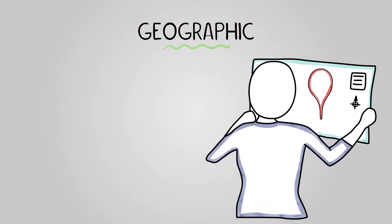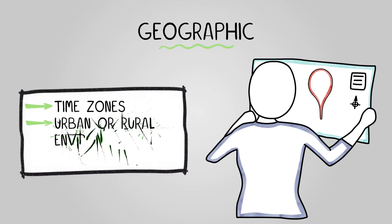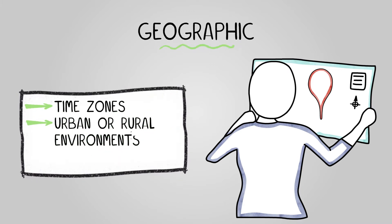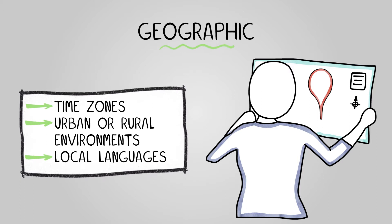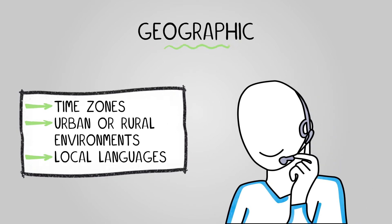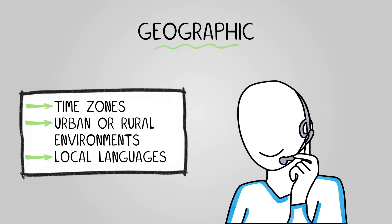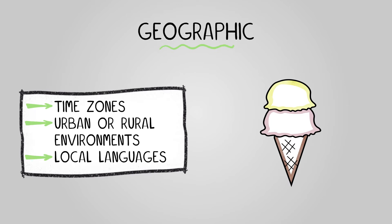Geographic segmentation focuses on customers' physical locations and considers factors such as time zones, urban or rural environments, and local languages. This helps businesses provide better support and understand audience-specific factors. For example, a business might adapt their customer support for a target audience based in Australia, or recognize that people in hot countries may have a higher interest in ice cream products than those in cold regions.